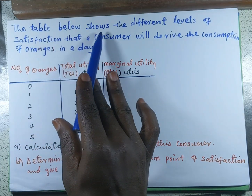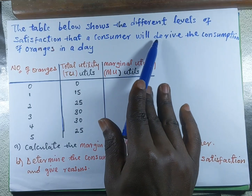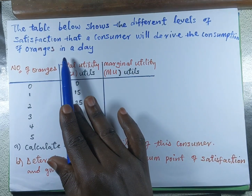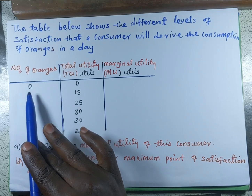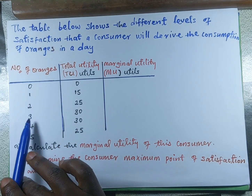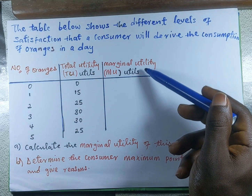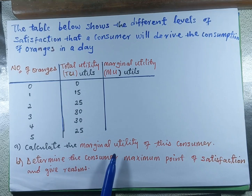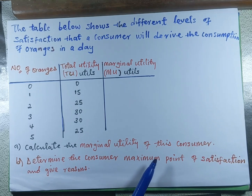The question says that the table below shows the different levels of satisfaction that the consumer will derive from the consumption of oranges in a day. The number of oranges have been given as one, two, three, four and five, and the total utility has been given. We need to calculate the marginal utility. The last part asks us to determine the consumer's maximum point of satisfaction and give reasons.